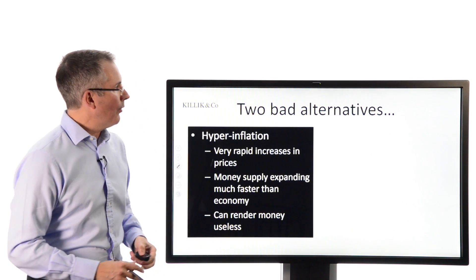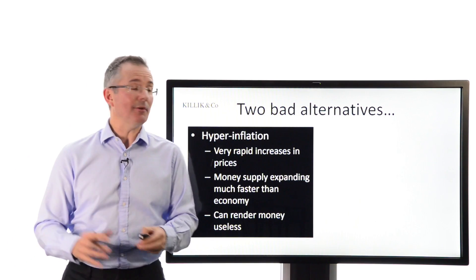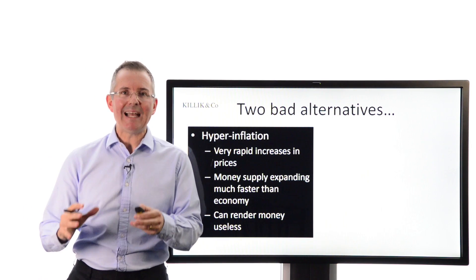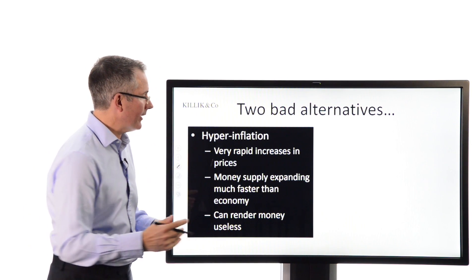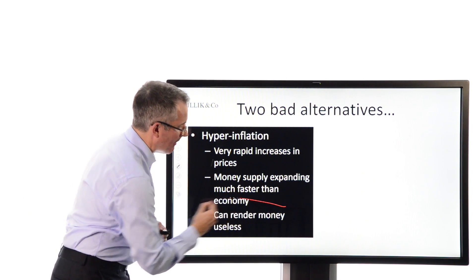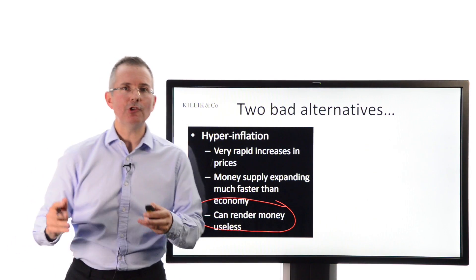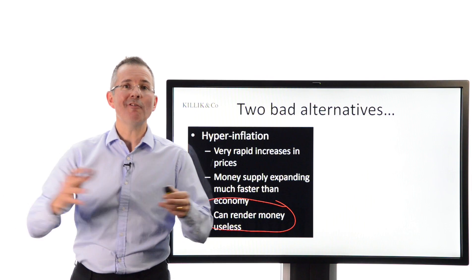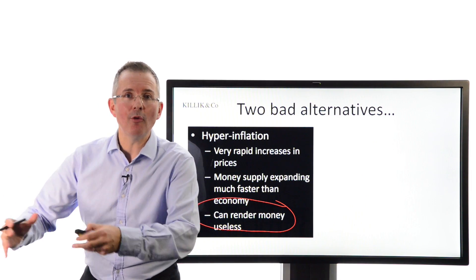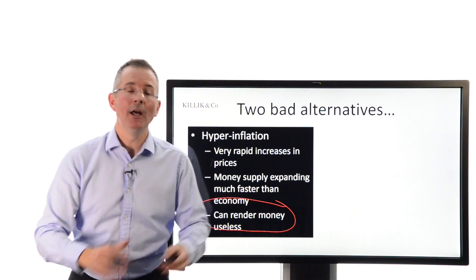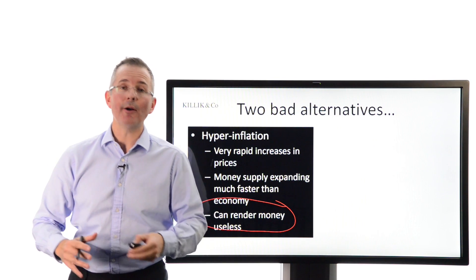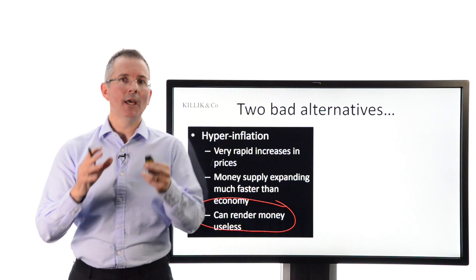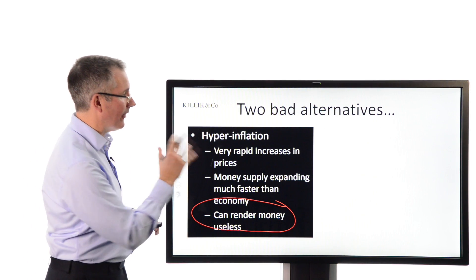There are two bad alternatives to consider. High inflation, especially where it goes into hyperinflation, is bad news for several reasons. It can render money completely useless. Take an extreme case — Germany in the 1920s, Zimbabwe more recently — the value of money was being destroyed so fast you effectively needed a wheelbarrow of the stuff to buy a loaf of bread, and the next day you needed two wheelbarrows to buy the same loaf. That's hyperinflation. High inflation is bad news; hyperinflation is a disaster.